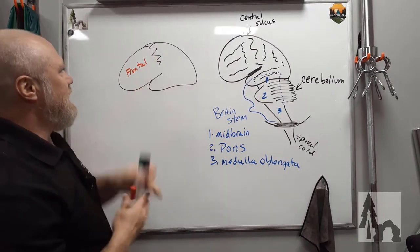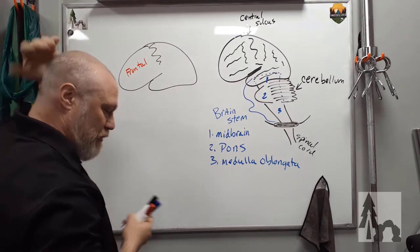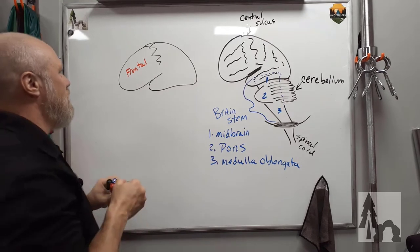The area that is posterior to that central sulcus and goes along the side, deep to the parietal bone, is going to be your parietal lobe.